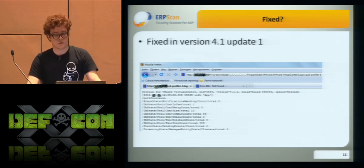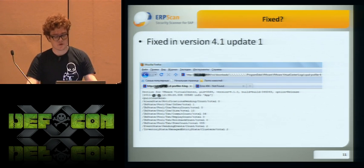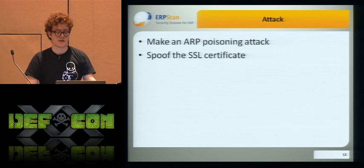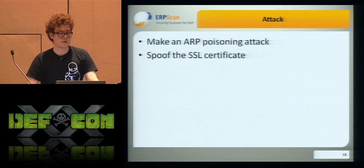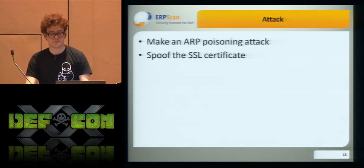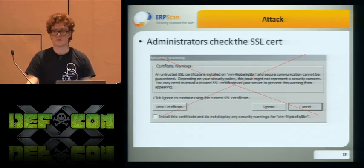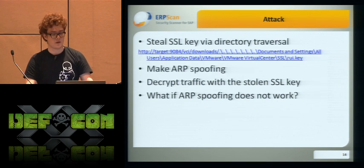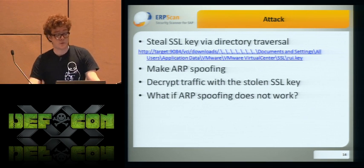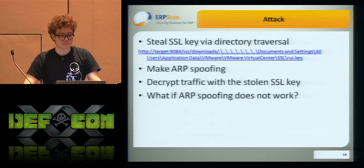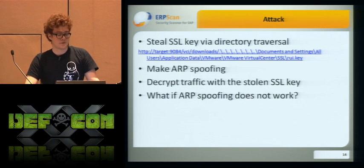Unfortunately, that was also fixed in our version. But the log file contains IP addresses of administrators. If it contains admin IP addresses, we can try a classic attack: ARP poisoning, spoof the SSL certificate, and sniff traffic. But the administrators of this network were pretty clever — they had added the certificate to trusted and didn't clear the warning. So that didn't work. We found another way: we could still read files via directory traversal, do ARP poisoning, and decrypt traffic. But what if IP spoofing doesn't work?